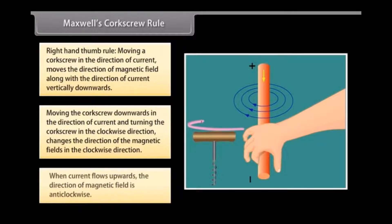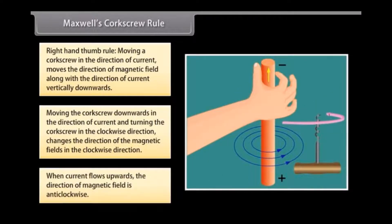So, when current flows upwards, the direction of magnetic field changes and is anticlockwise.